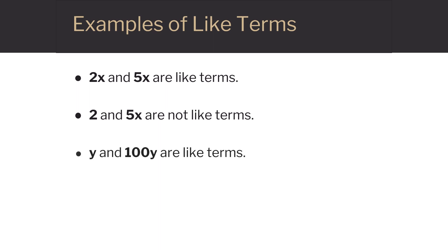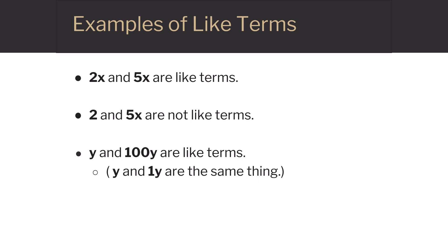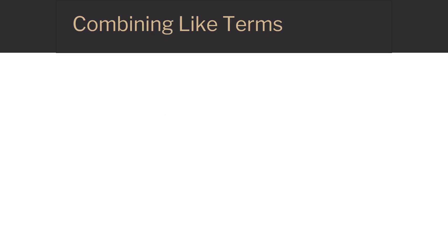Y and 100y are like terms. The y has a secret 1 in front of it and could be rewritten as 1y. 2x squared and 6x squared are like terms — they're both x squared terms.